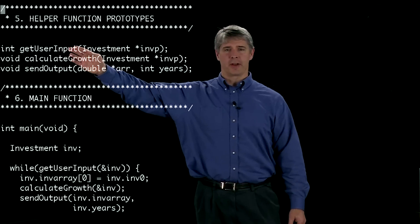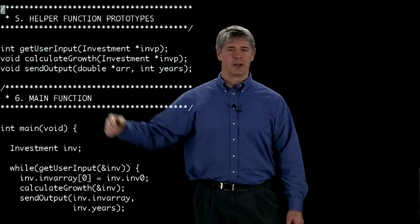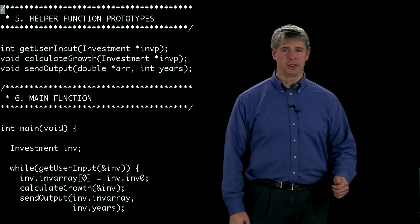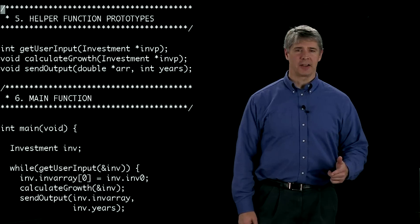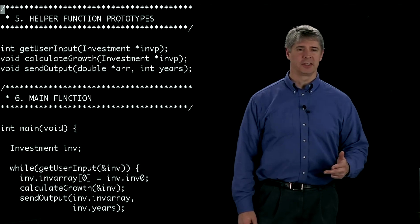In particular, in this program we've got three helper functions. One is called getUserInput, the second one is called calculateGrowth, and the third one is called sendOutput.